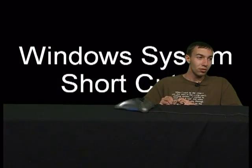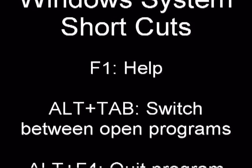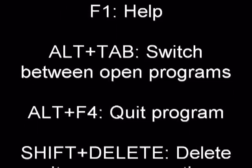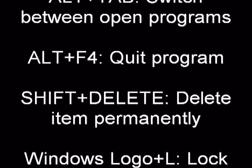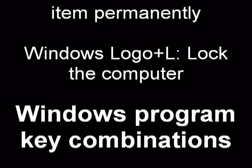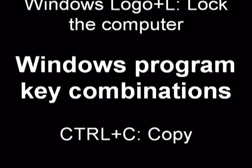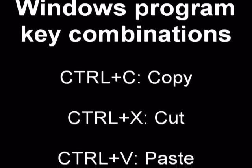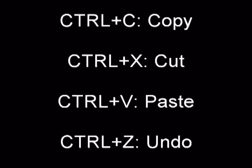The keyboard shortcuts are basically: F1 for help, Alt+Tab for switching between open programs, Alt+F4 to quit a program, Shift+Delete to delete an item permanently, and Windows logo plus L to lock the computer. For Windows programming key combinations: Ctrl+C is copy, Ctrl+X is cut, Ctrl+V is paste — your basic ones. Ctrl+Z is undo, that's basically for Word. Ctrl+B is bold, Ctrl+U is underline, Ctrl+I is italicize.